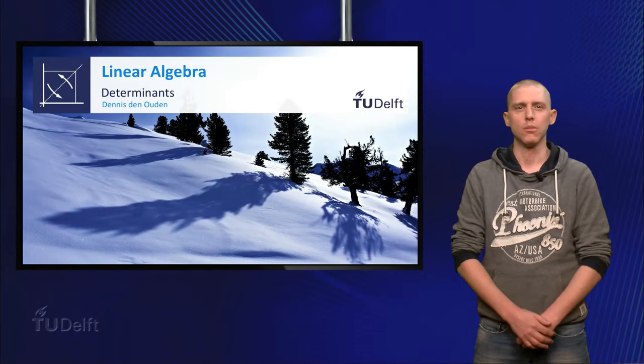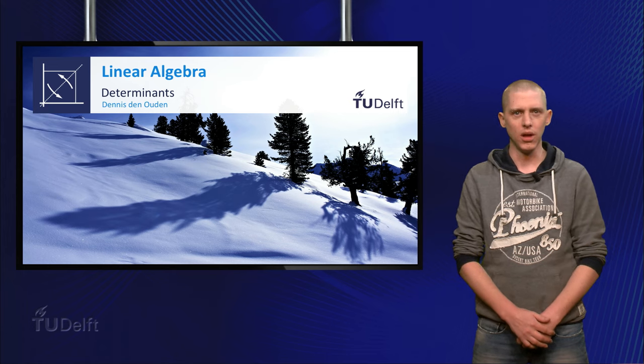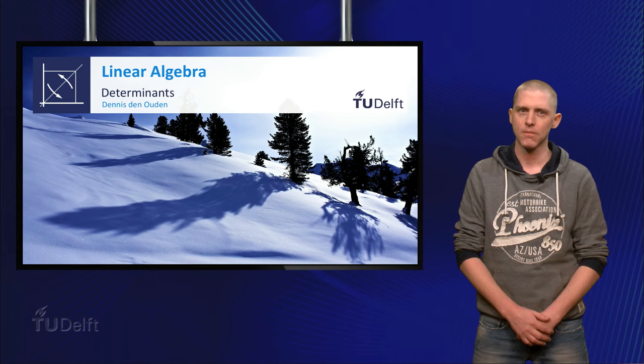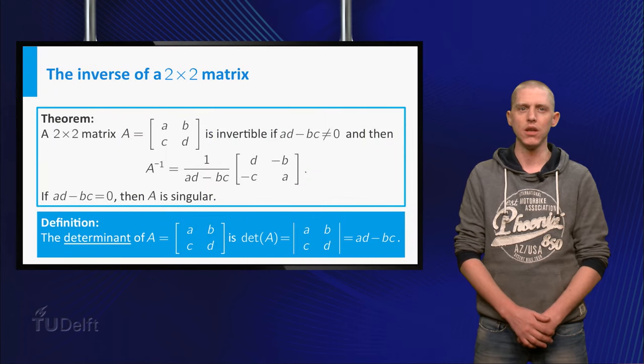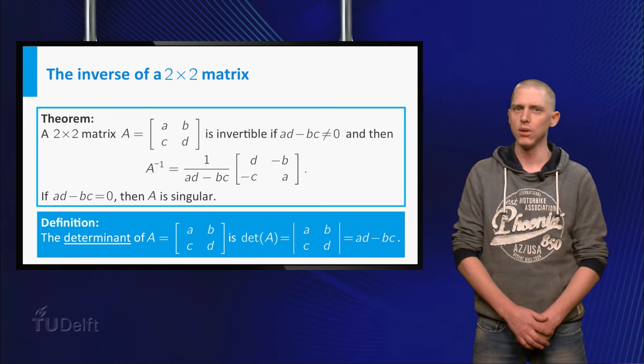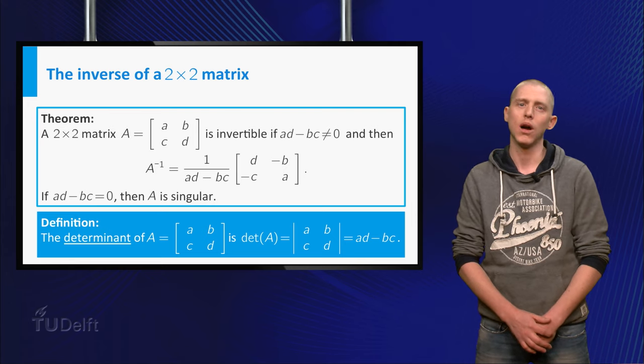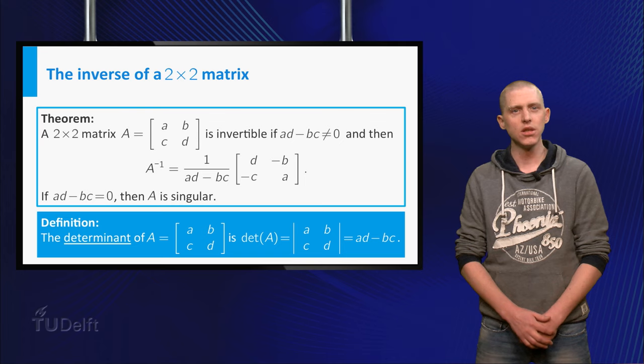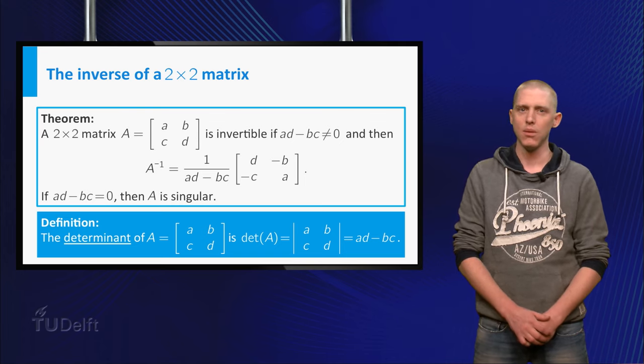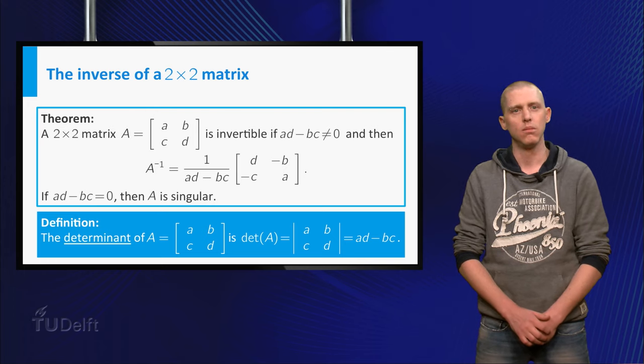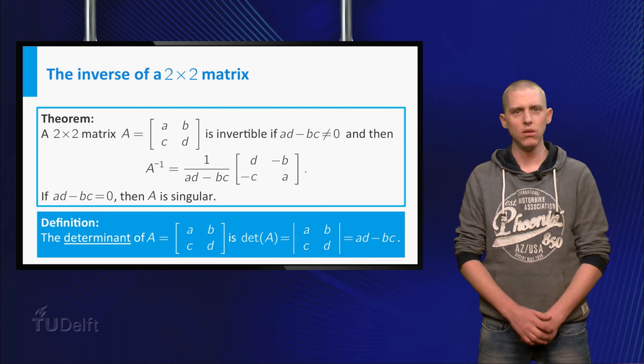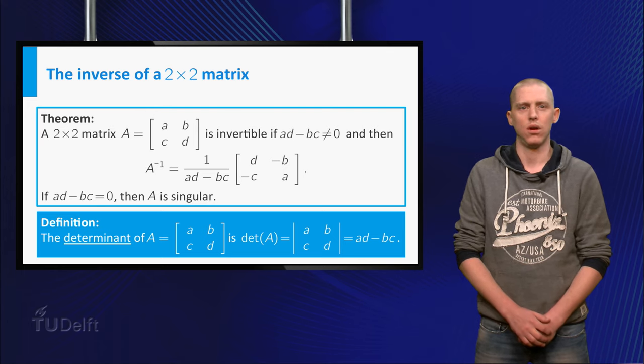You learned about the inverse of a matrix and you learned a direct formula for a 2 by 2 matrix if this matrix was invertible. A 2 by 2 matrix A given by ABCD is invertible if the determinant of A, A times D minus B times C, is unequal to zero and has inverse 1 over the determinant of A times D minus B minus CA. If the determinant of A is zero, A is singular or non-invertible.